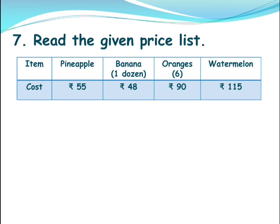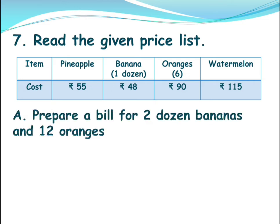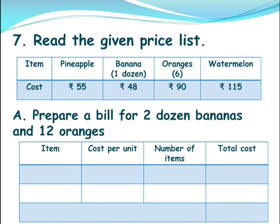Now let's see what question they are asking us. Prepare a bill for two dozen bananas and 12 oranges. For preparing a bill, you need to draw a table like this. The columns should be: item — that means the thing, the fruit, or it might be a vegetable or anything — cost per unit, that means cost of one item, and number of items, how many you are taking. Based on that you need to calculate the total cost, and at the end you need to add all these and write the grand total.